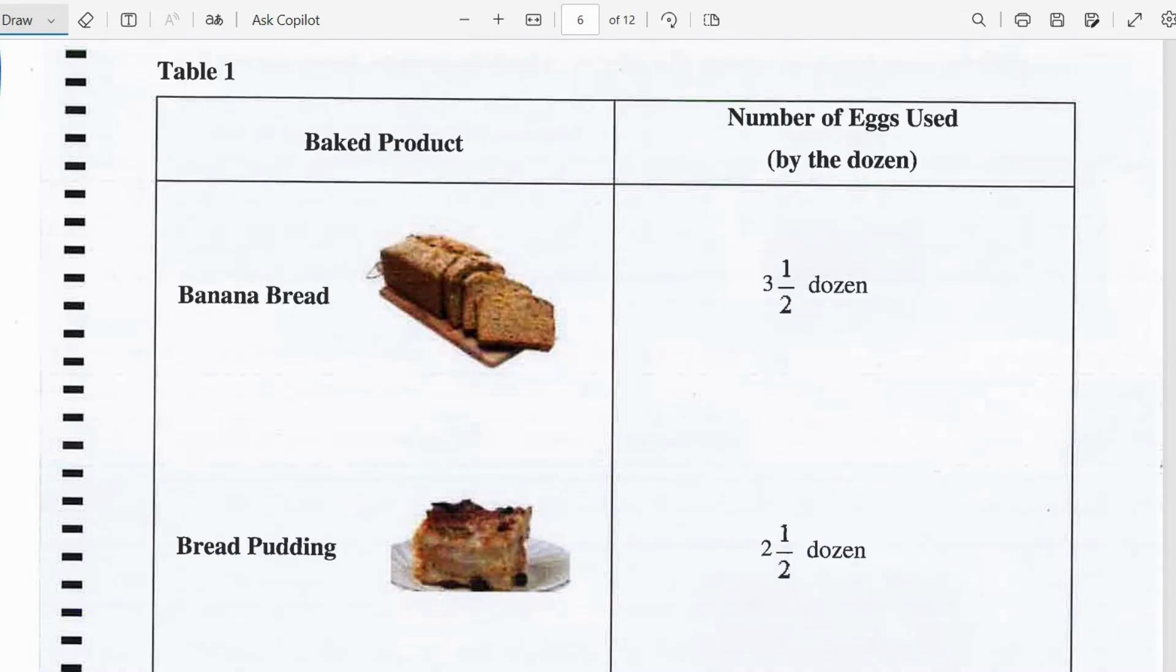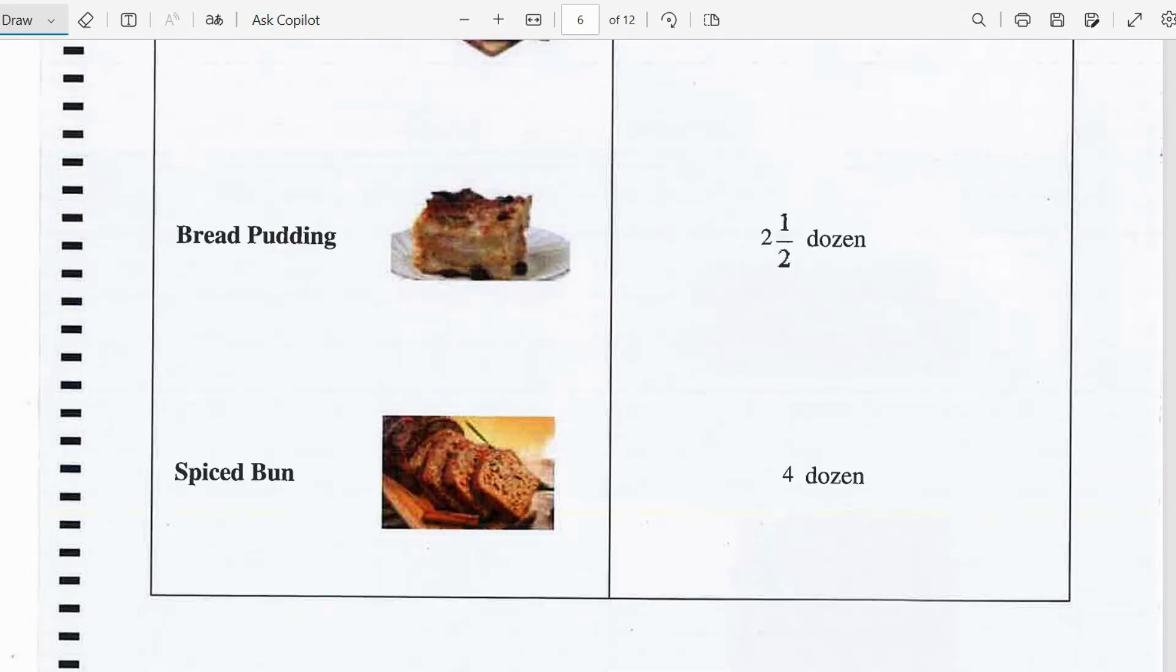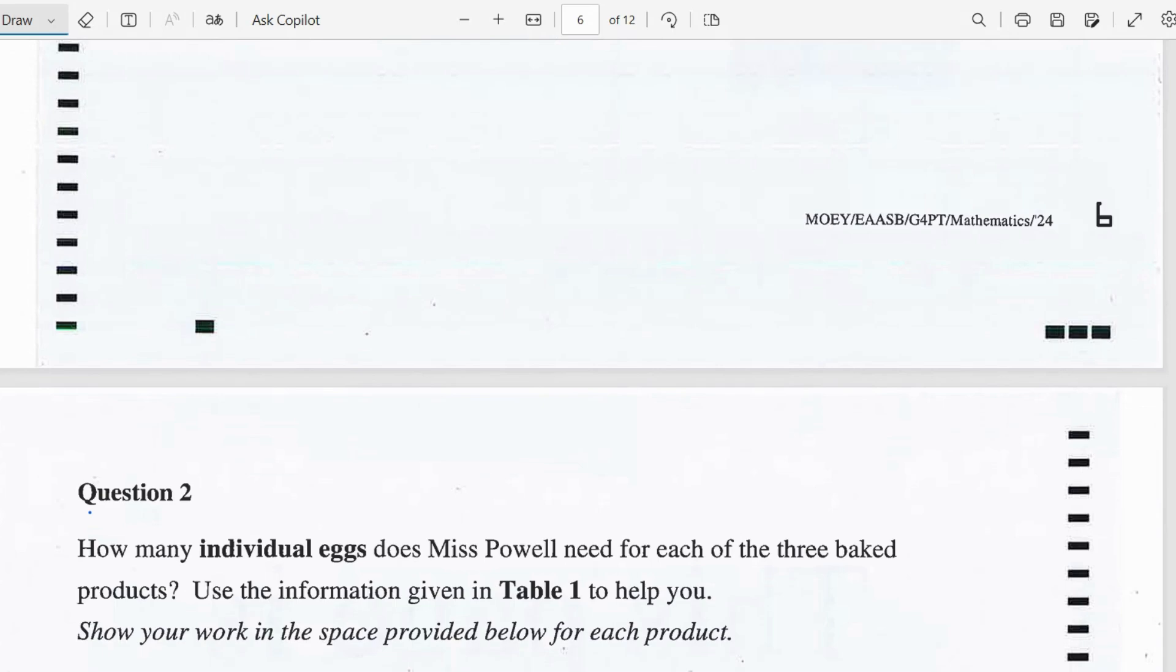So for her banana bread she uses 3 and a half dozen of eggs. For the bread pudding she used 2 and a half dozen of eggs. And for the spice one she used 4 dozen eggs.